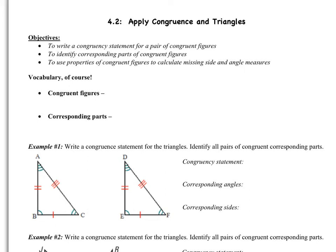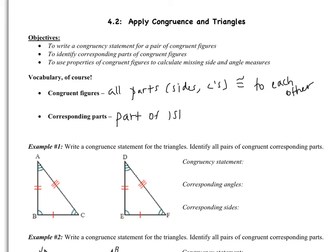So of course we're going to start with some vocabulary. Congruent figures have all parts — and in this case by parts I mean sides and angles — congruent. So it's two figures where all their sides and all their angles are congruent to each other. The corresponding parts are the part of the first figure that's congruent to the part of the second figure. I think the best idea is just to move on to example one and jump right in.